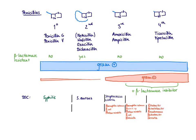Methicillin was the first second generation penicillin developed. Because it was so frequently used to treat Staph aureus, Staph aureus came up with a plan to become resistant — you will hear the term MRSA, which refers to Staph aureus that became resistant to second generation penicillins, with methicillin as the prime example. Although methicillin is no longer on the market due to adverse effects, we still have nafcillin, oxacillin, and dicloxacillin, which are used to treat Staph aureus — but only MSSA (methicillin-sensitive Staph aureus), not MRSA (methicillin-resistant Staph aureus).